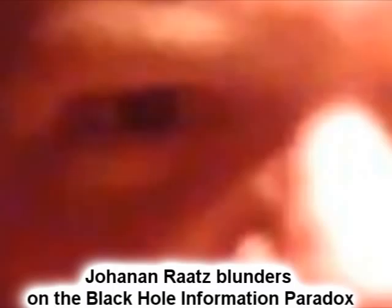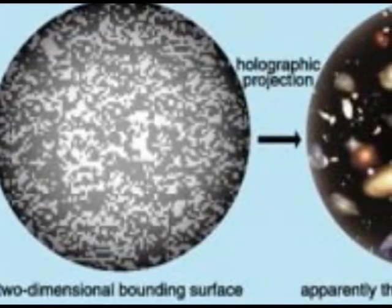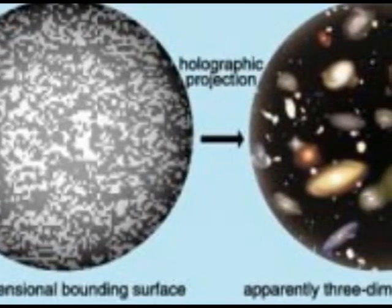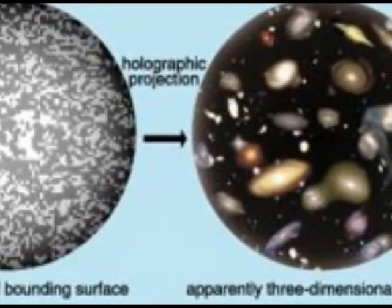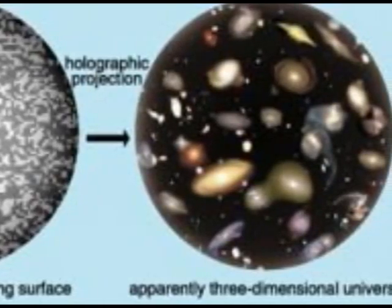The holographic principle is the solution to the black hole information paradox. Johanan Raatz blundered when he boldly claimed that the holographic principle is the solution to the black hole information paradox, because that directly implies that it's the only solution when it most certainly is not.